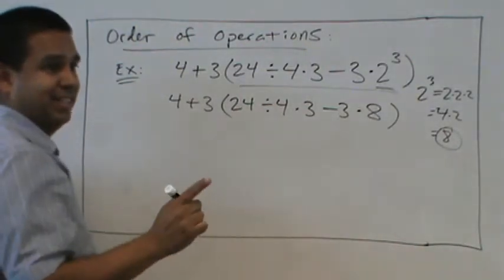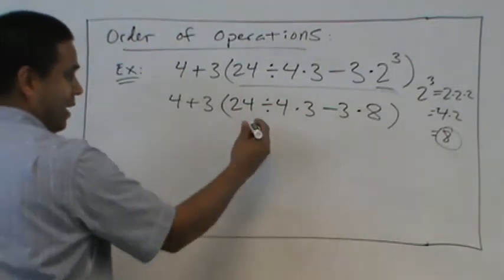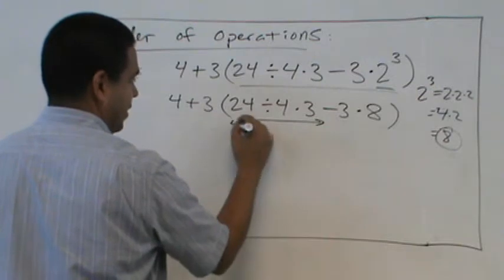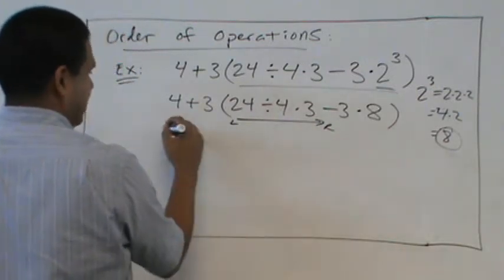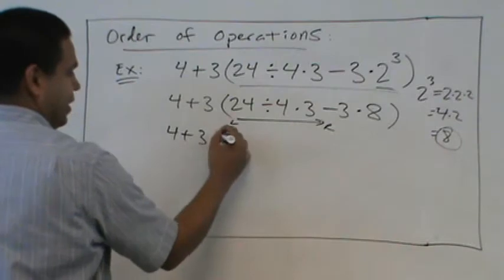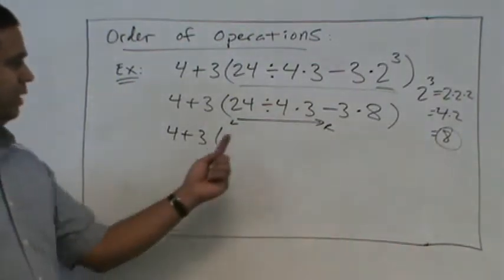Then what's next? Divide. We divide because we go from left to right. Left to right. We're still working in the parentheses. So the 4 plus 3 stays the same.